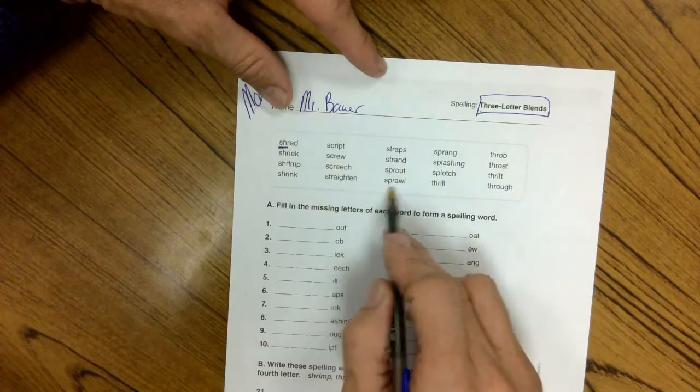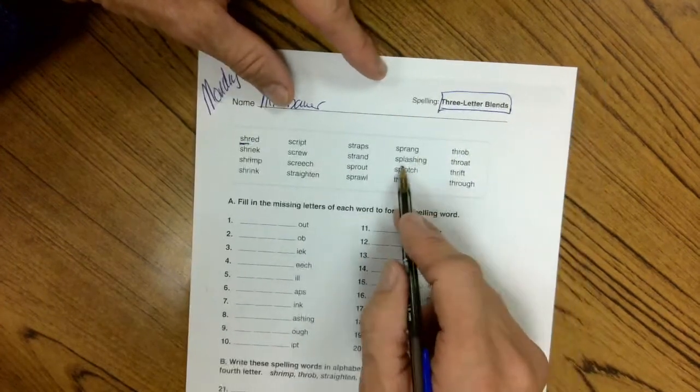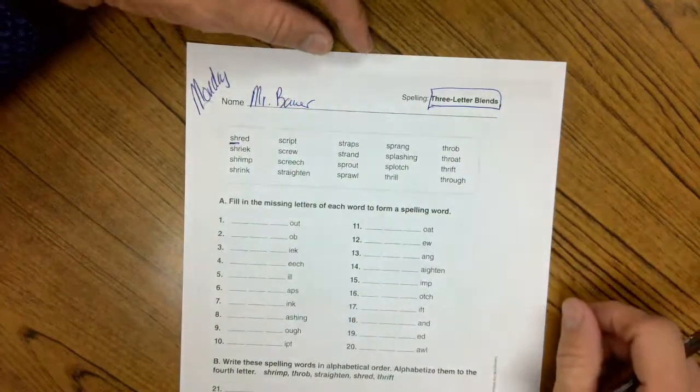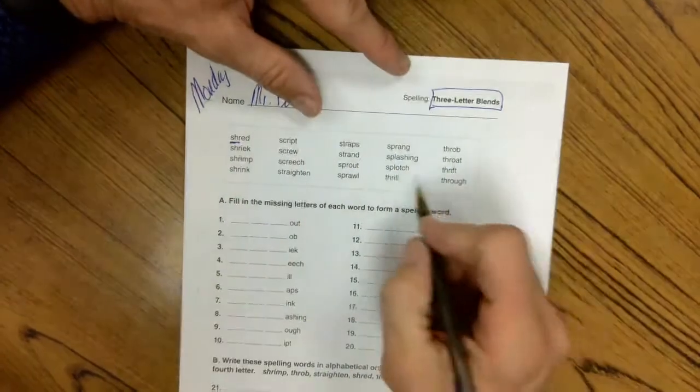S-P-R: sprout, sprawl, sprang. S-P-L: splashing and splotch. Like you drop a big chunk of paint on your lap, that would be a splotch.